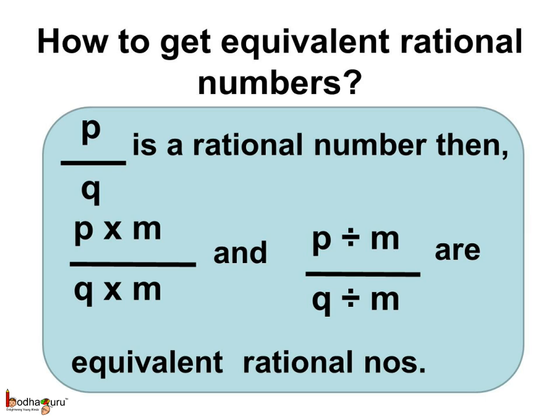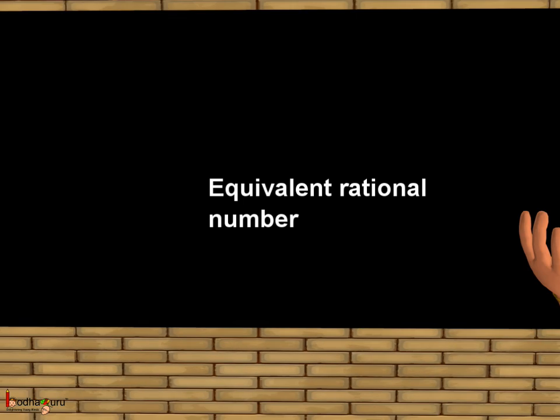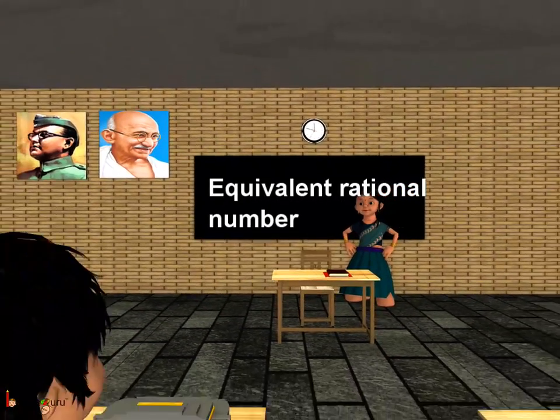To summarize what we learned today: to get an equivalent rational number, if p by q is a rational number, multiply both the numerator and the denominator by the same number m, but not 0. To check if two rational numbers are equivalent, we use the property of cross products or cross multiplication. If a by b and c by d are two equivalent rational numbers, then a multiplied by d should be equal to c multiplied by b. That's all for now. Bye-bye children.